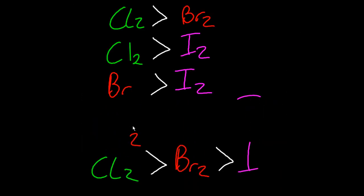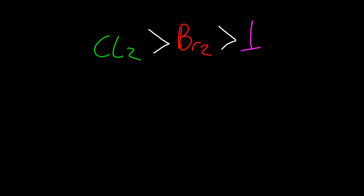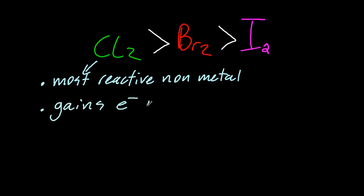So let's try and explain that a little better. So all of these are non-metals. Non-metals are electrophilic. They like electrons. So for chlorine, it's the most reactive non-metal. Non-metals love electrons. So it's going to gain electrons most easily relative to the others.